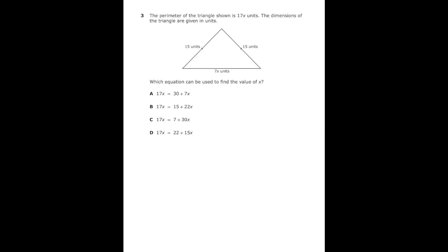This is number three from the 2022 eighth grade math STAR test. It says the perimeter of the triangle shown is 17x units. The dimensions of the triangle are given in units. Which equation can be used to find the value of x? So if we're talking about perimeter I know that we're going to be adding all three sides up of my triangle.